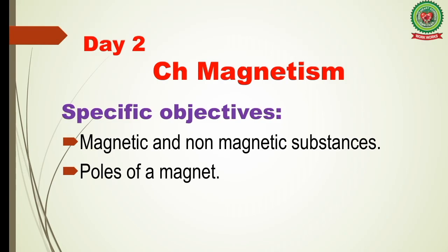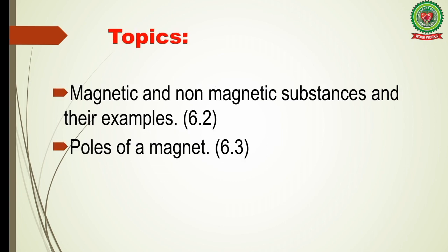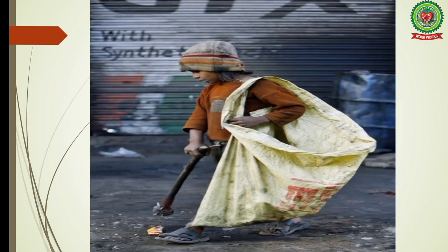Hello students, we are doing chapter Magnetism and this is day two of this chapter. Specific objectives for today's class are magnetic and non-magnetic substances, and poles of a magnet. In the previous class we discussed the discovery of magnet and shapes of magnets. Topics for today are magnetic and non-magnetic substances (topic 6.2) and poles of a magnet (topic 6.3).